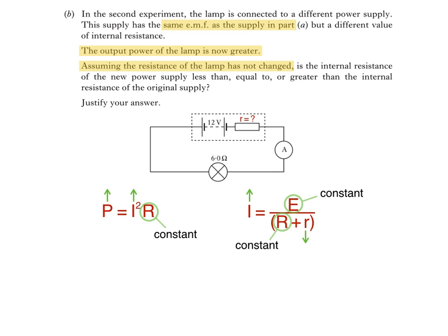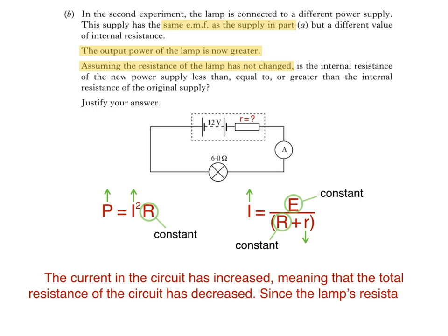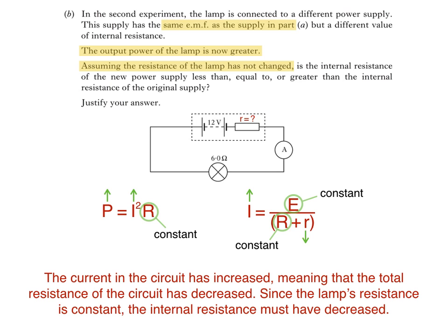Here's what we can write for our answer: The current in the circuit has increased, meaning that the total resistance of the circuit has decreased. Since the lamp's resistance is constant, the internal resistance must have decreased. This part of the question is a little bit trickier, so you may want to replay it at some point.